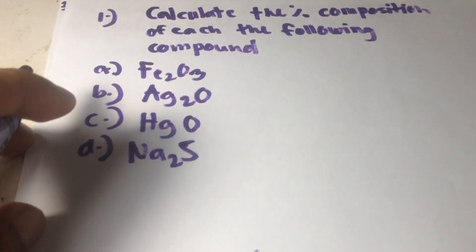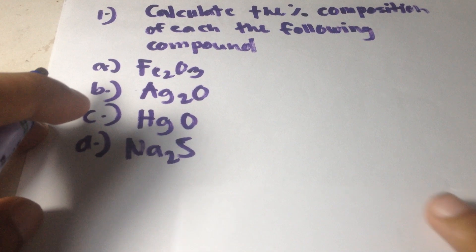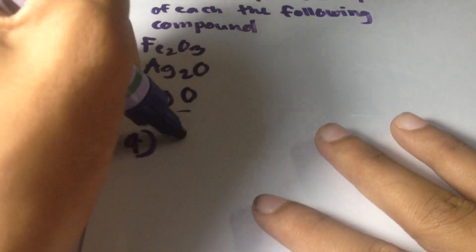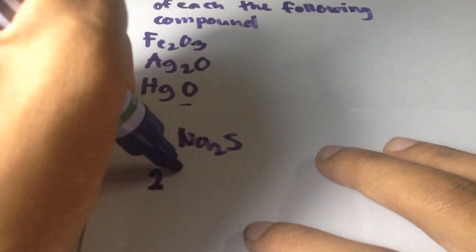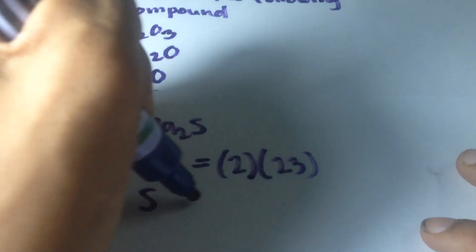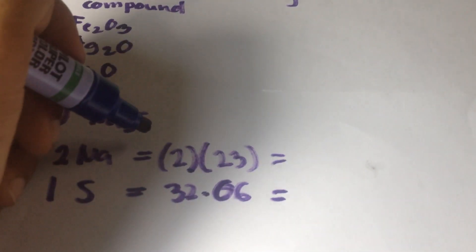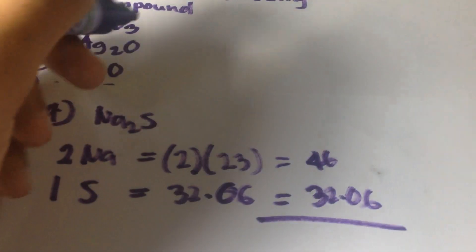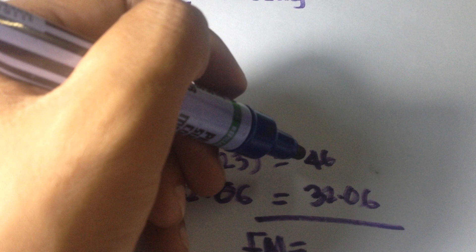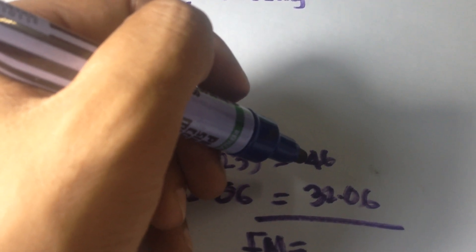In letter D, we have sodium sulfide. It has 2 moles of sodium and 1 mole of sulfur. So, 2 times 23 equals 46, and the atomic mass of sulfur is 32.06. The formula mass is 46 plus 32.06, which equals 78.06 grams per mole of sodium sulfide.